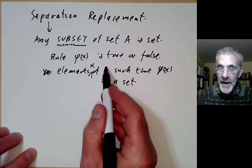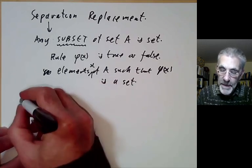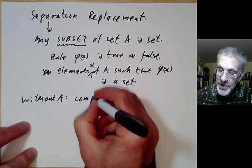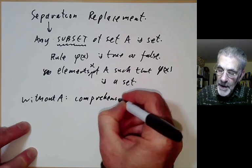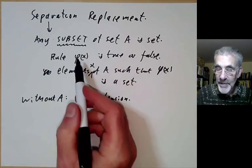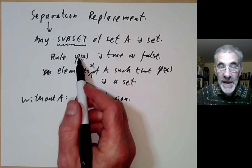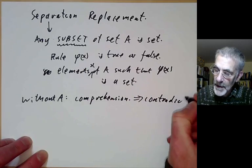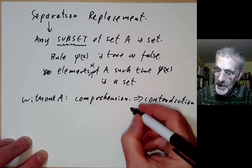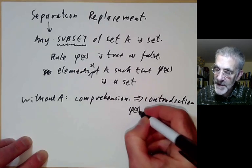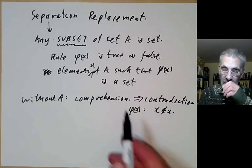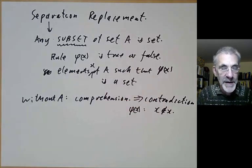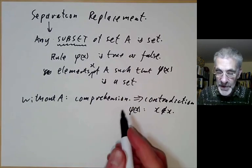If you omit the set A, this gives the axiom of comprehension, which says that for any property you can form the set of elements with that property. And this leads to a contradiction using Russell's paradox, where phi of x means x is not a member of x. Putting in the set A is a way of shielding us from this contradiction.